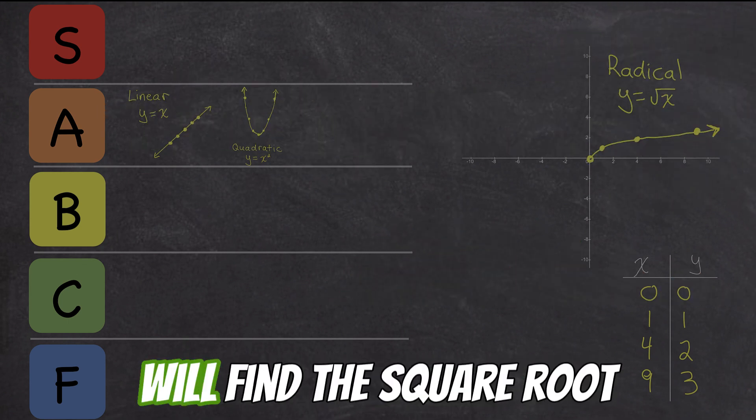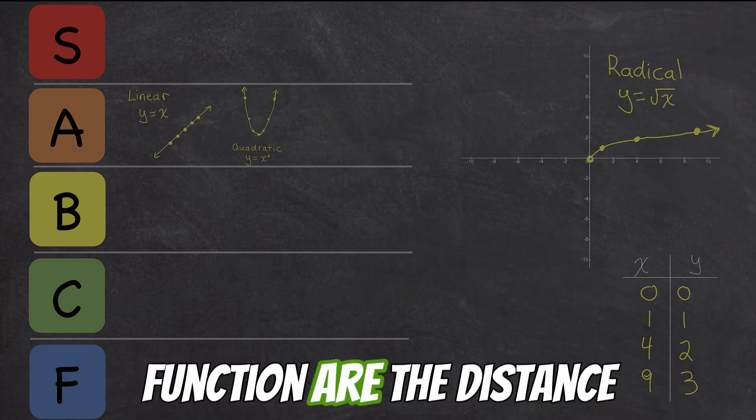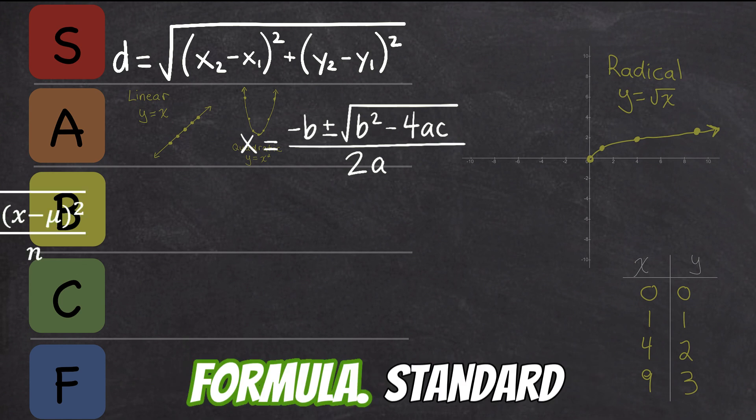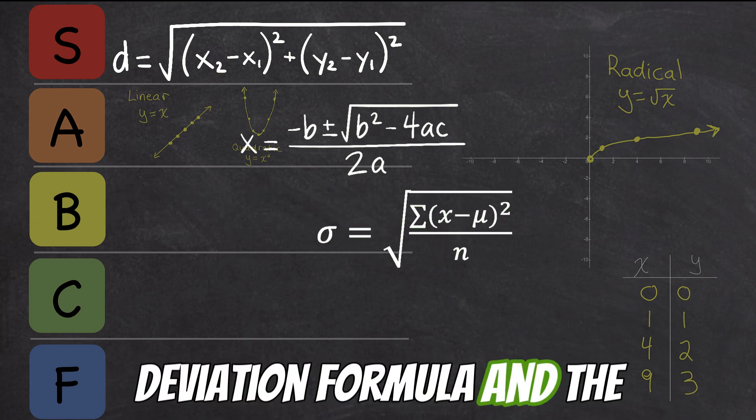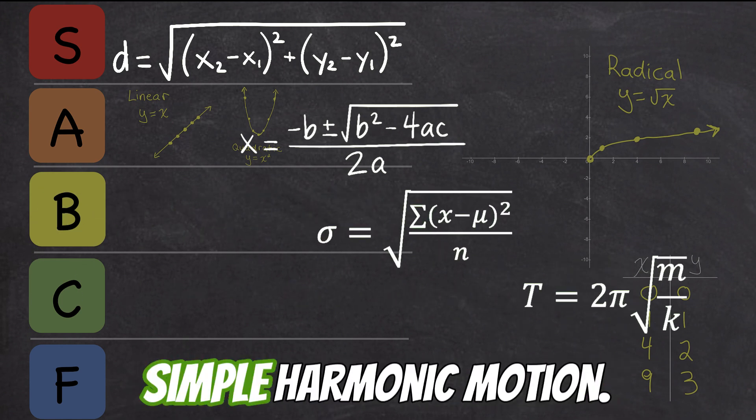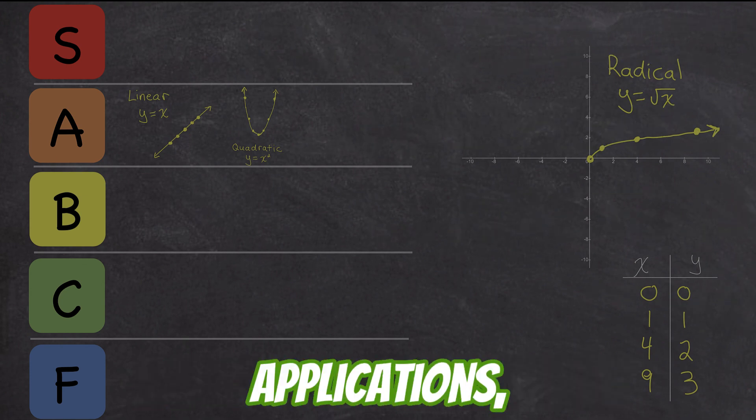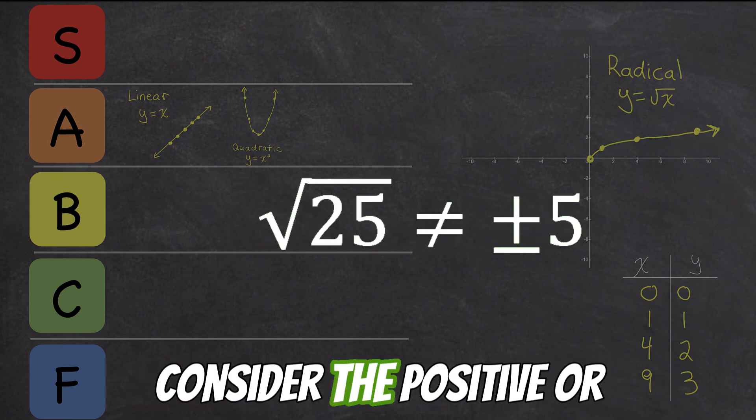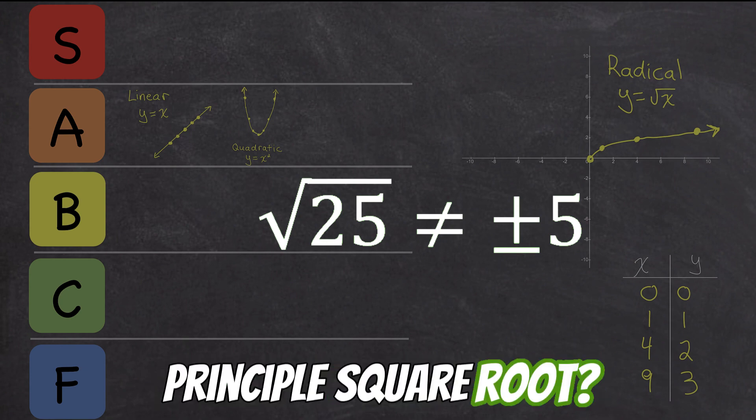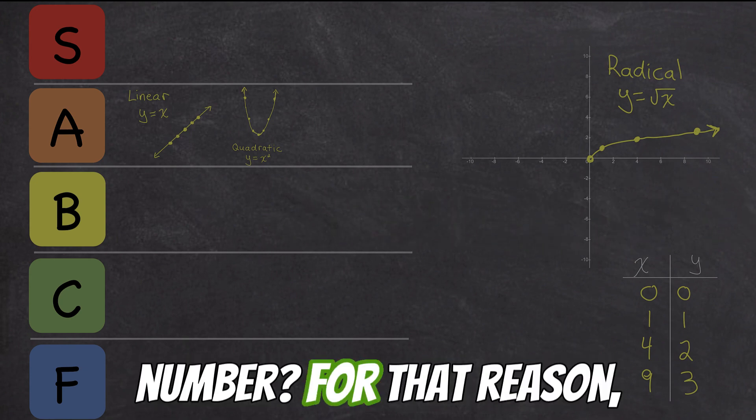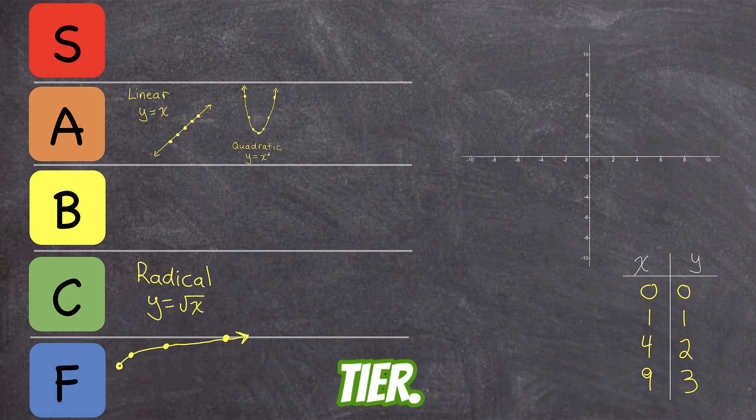Some places where you will find the square root function are the distance formula, the quadratic formula, standard deviation formula, and the formula for the period of simple harmonic motion. Even though this function has lots of interesting applications, why do we so often only consider the positive or principal square root? What about the negative square root of a number? For that reason, let's put this function in C-tier.